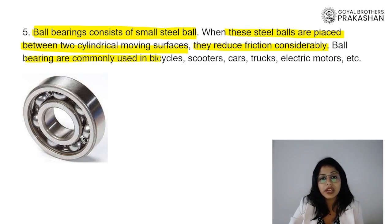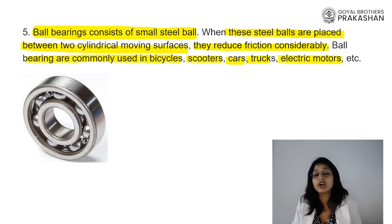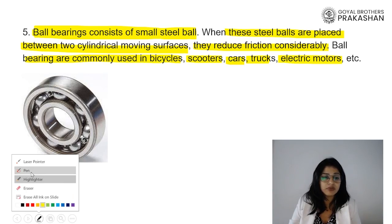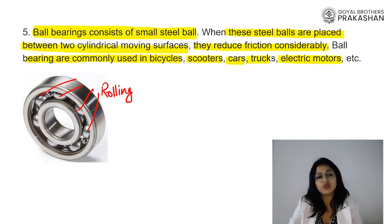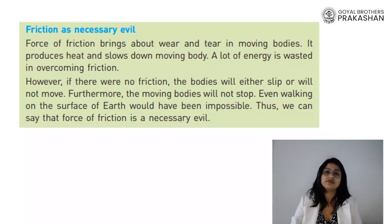Ball bearings are used in bicycles, scooters, cars, trucks, and even motors, reducing friction by using the property that rolling friction is less than sliding and static friction. Here, two different cylinders have small balls capable of rolling in between them, reducing friction.